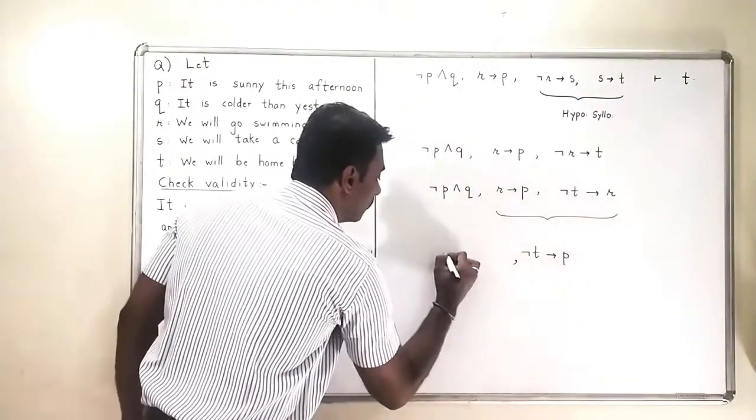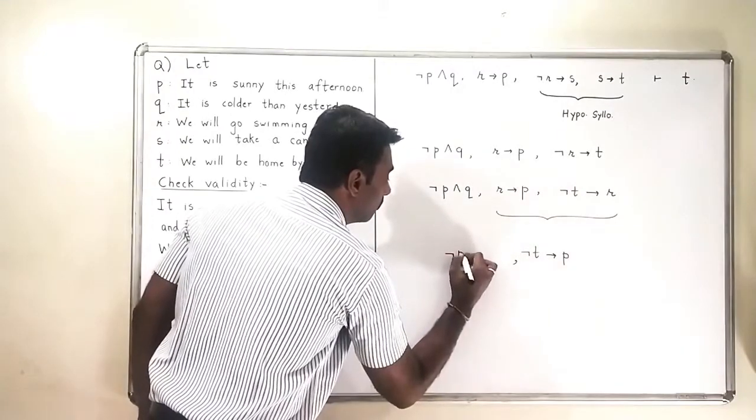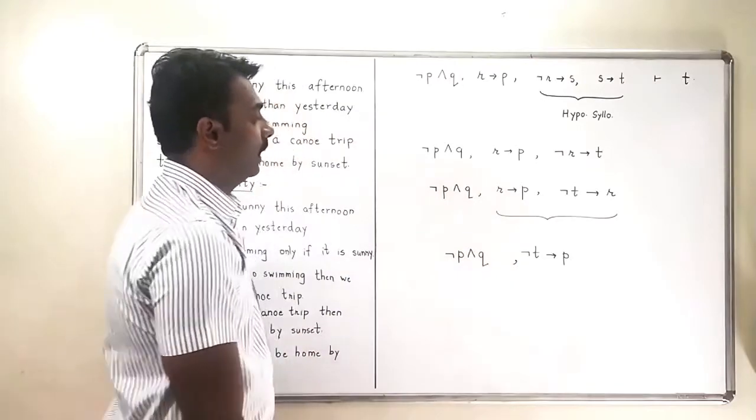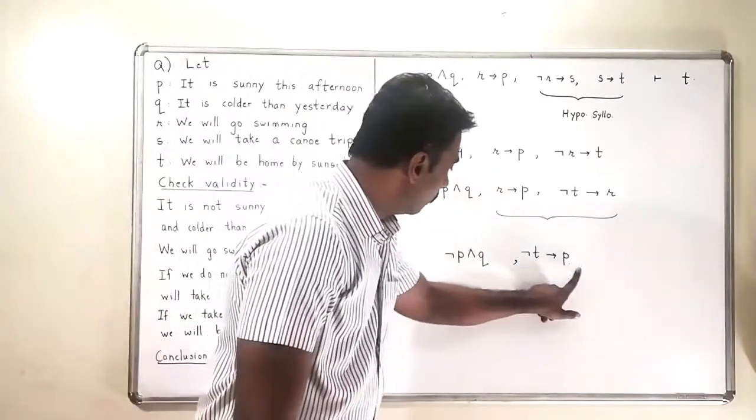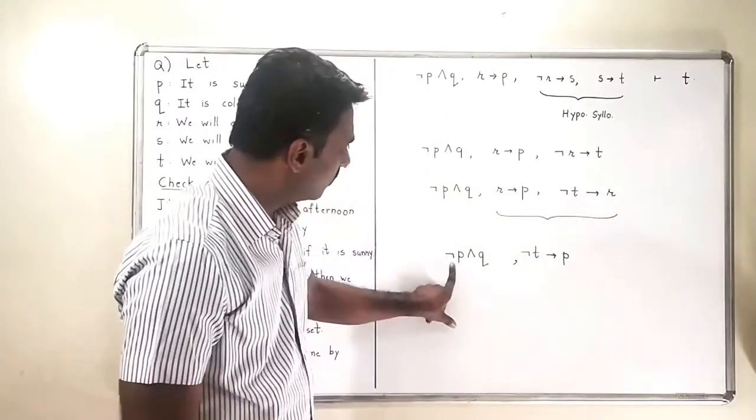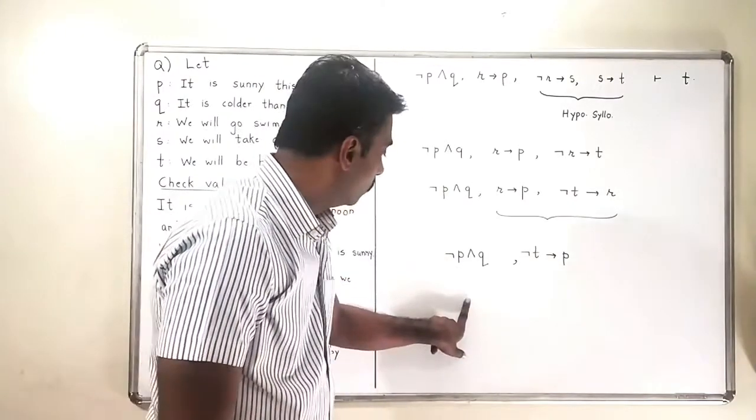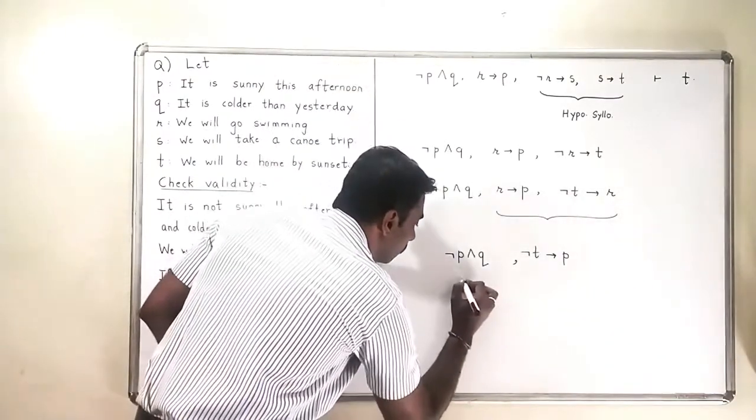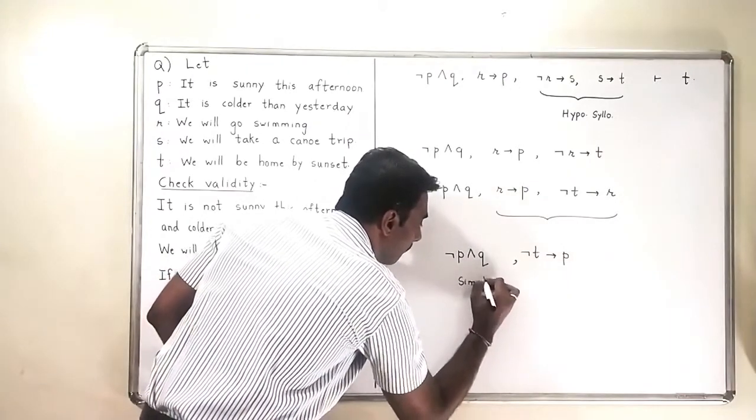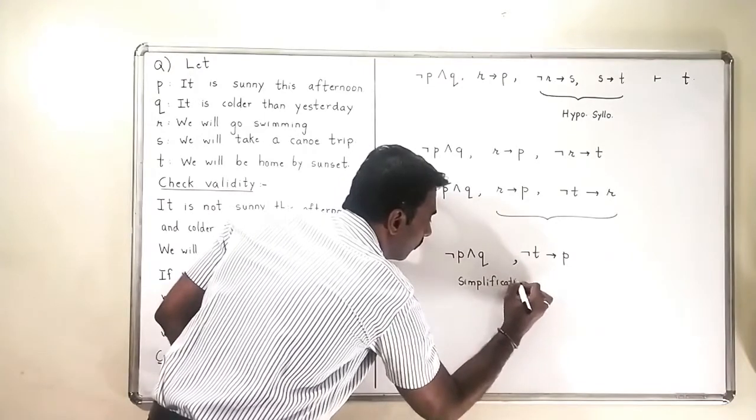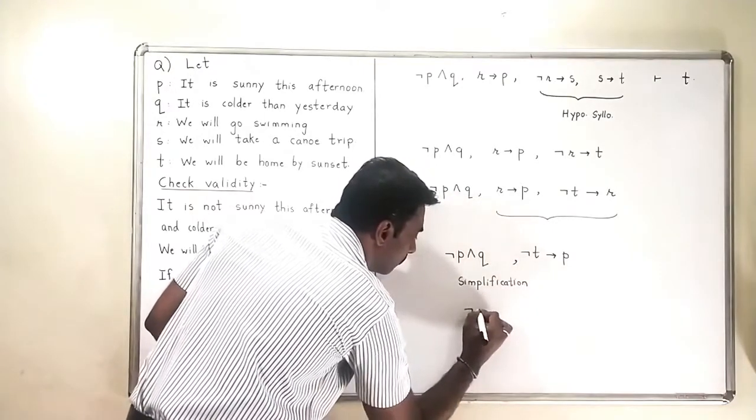And this statement is becoming P, and this statement is negation P and Q. Now in this argument, what you see is that negation P and Q can be simplified to only negation P. This is your simplification. I really don't need Q here.